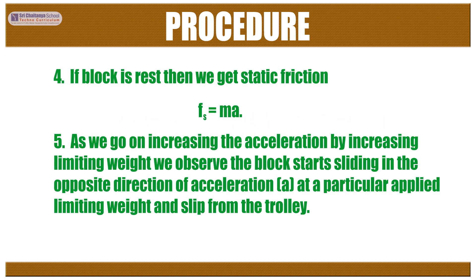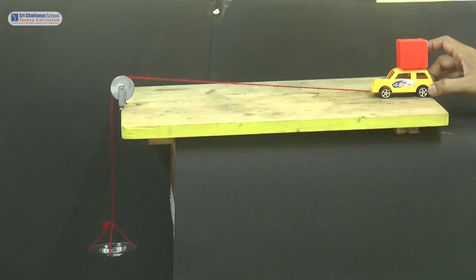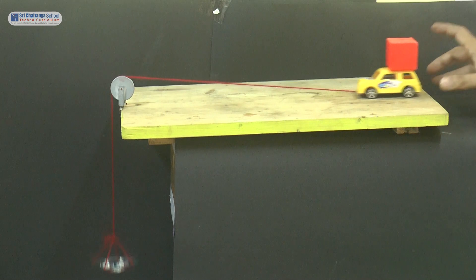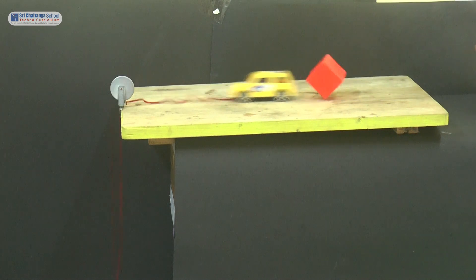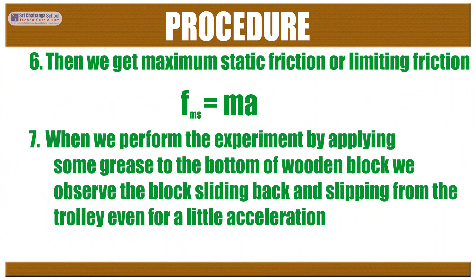If the block is at rest, then we get static friction Fs = ma. As we go on increasing the acceleration by increasing the limiting weight, we observe the block starts sliding in the opposite direction of acceleration at a particular applied limiting weight and slips from the trolley. Then we get maximum static friction or limiting friction Fms = ma.